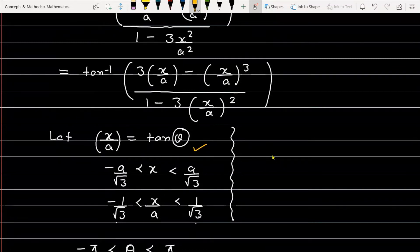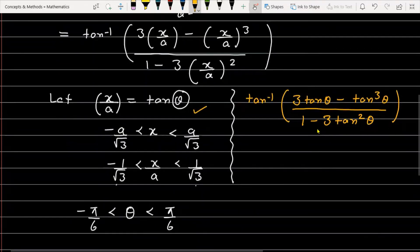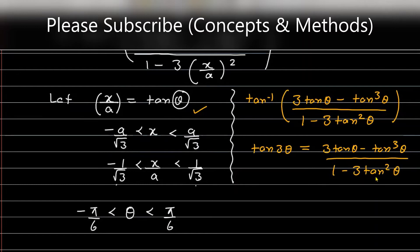As I mentioned, we are replacing x/a with tan(θ), so the expression converts to tan inverse of [3·tan(θ) − tan³(θ)] divided by [1 − 3·tan²(θ)]. Now, as you know, the formula for tan(3θ) is: 3·tan(θ) − tan³(θ) divided by 1 − 3·tan²(θ).